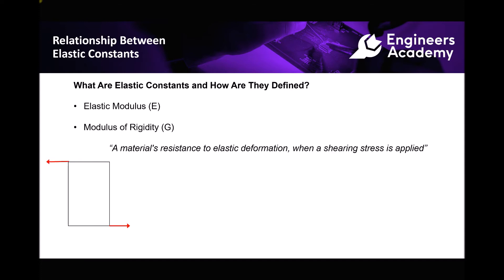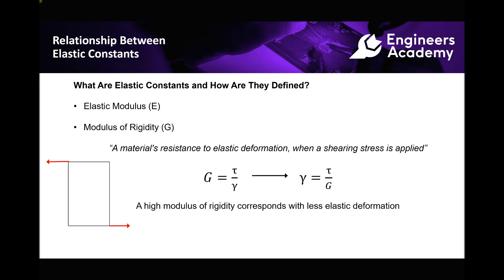Next we have our modulus of rigidity. The modulus of rigidity is a material's resistance to elastic deformation when a shearing stress is applied. There's a diagram in the bottom left hand corner to demonstrate shearing — essentially we're taking the top surface in one direction and the bottom surface in another direction, causing the object to skew or shear. The equation states that modulus of rigidity equals shear stress over shear strain. Rearranging to make shear strain the subject, shear strain equals shear stress over modulus of rigidity. A high modulus of rigidity corresponds with less elastic deformation when shear forces are applied.